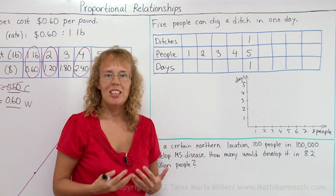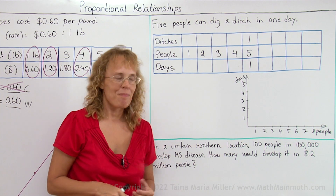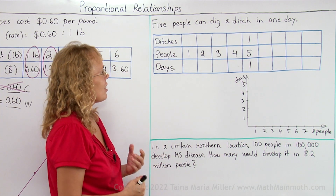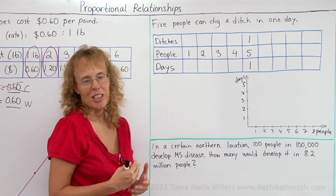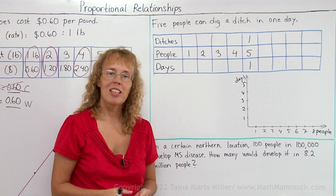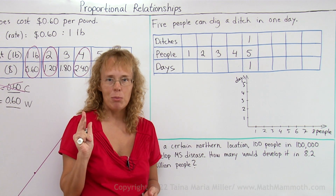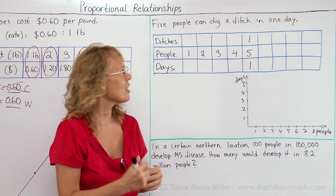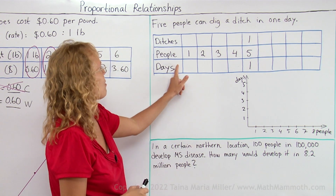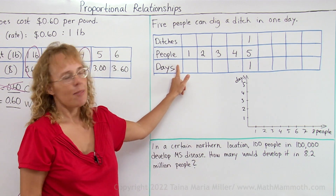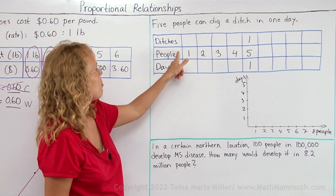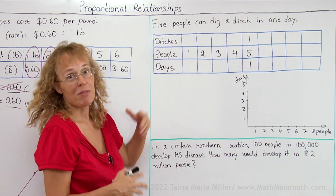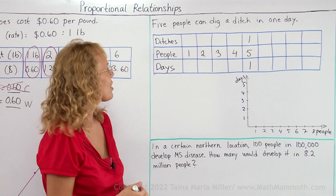Five people can dig a ditch in one day. Now this is a very interesting situation. There are actually three variables here — three things that can vary: the number of days could vary, the number of people could vary, and the number of ditches could vary.